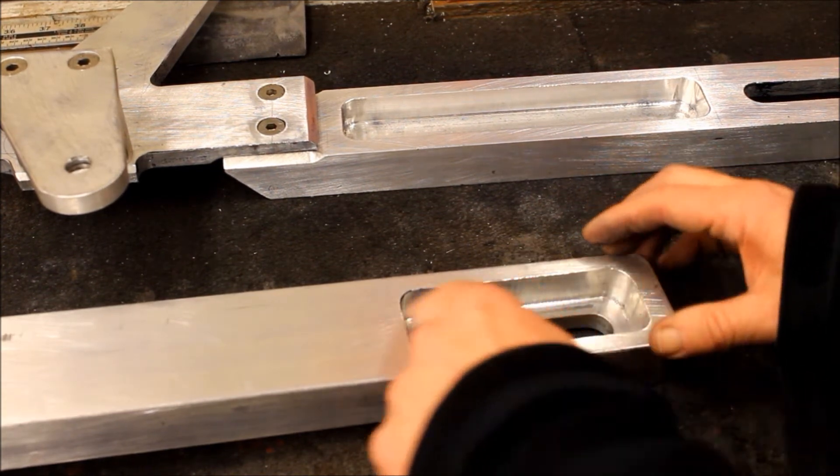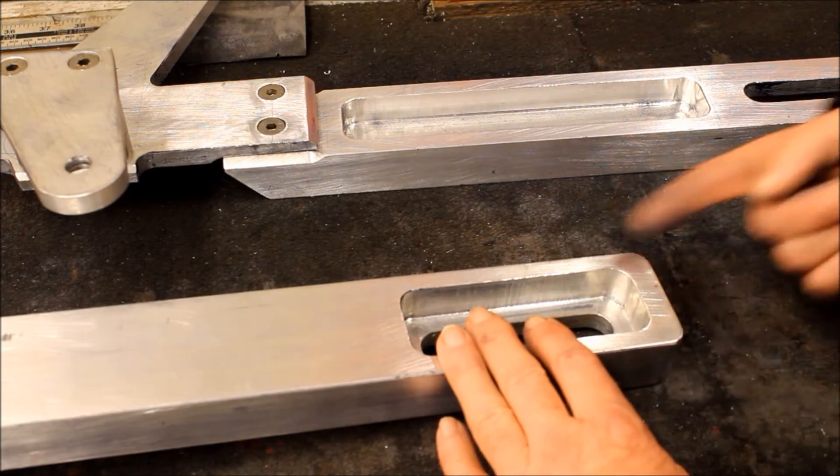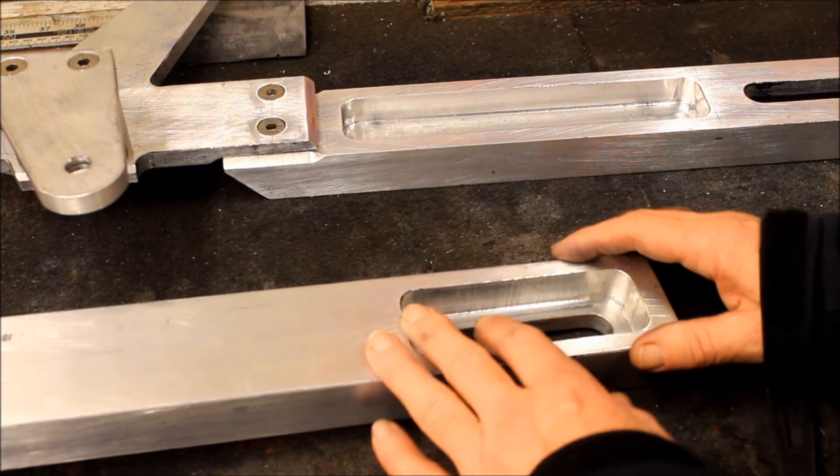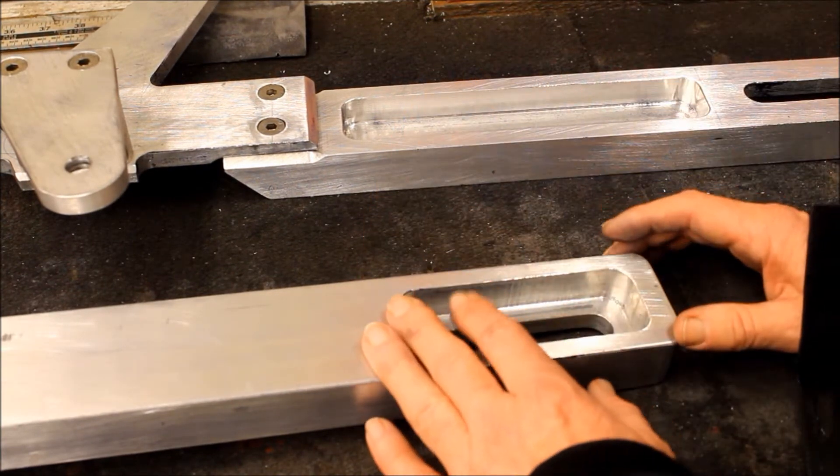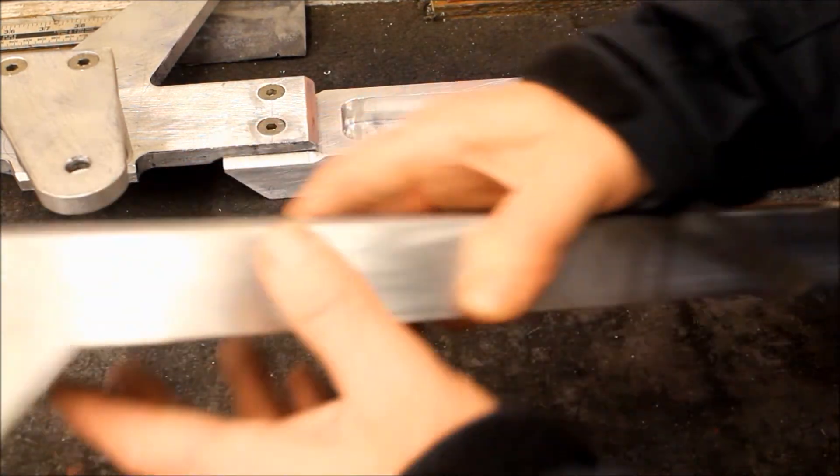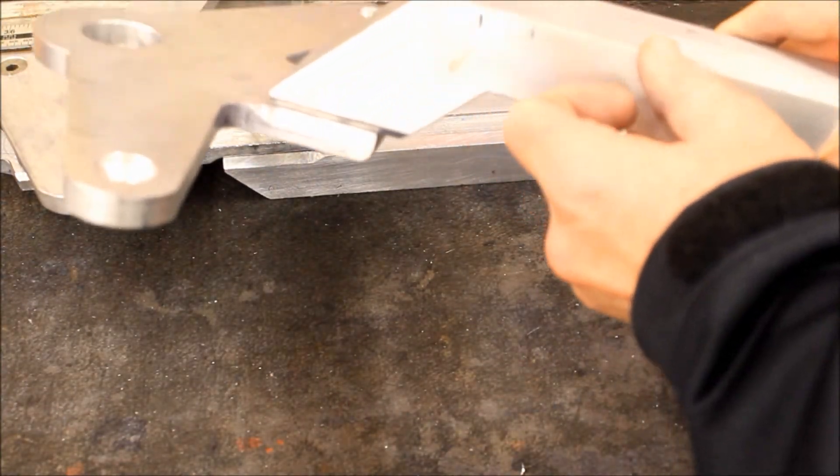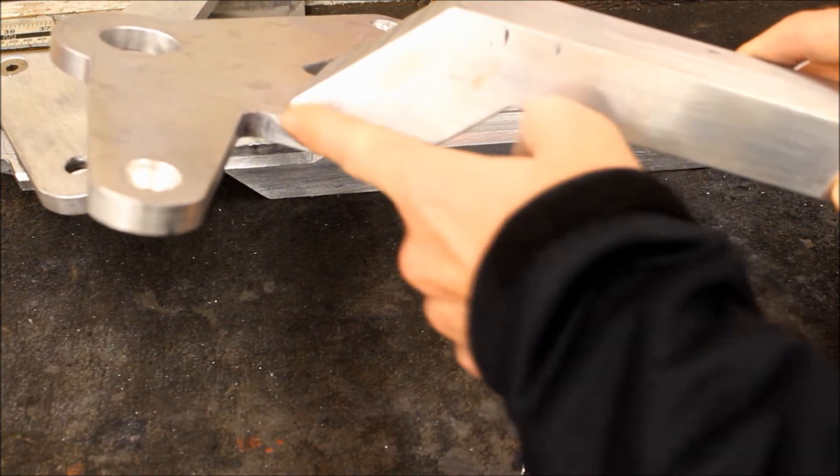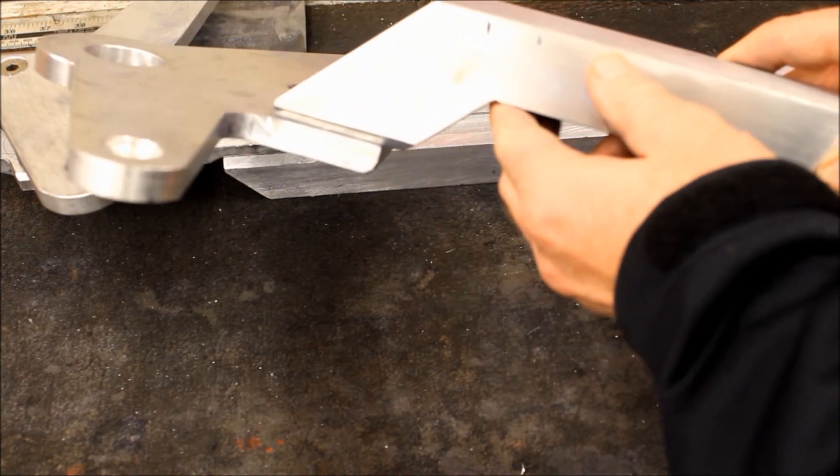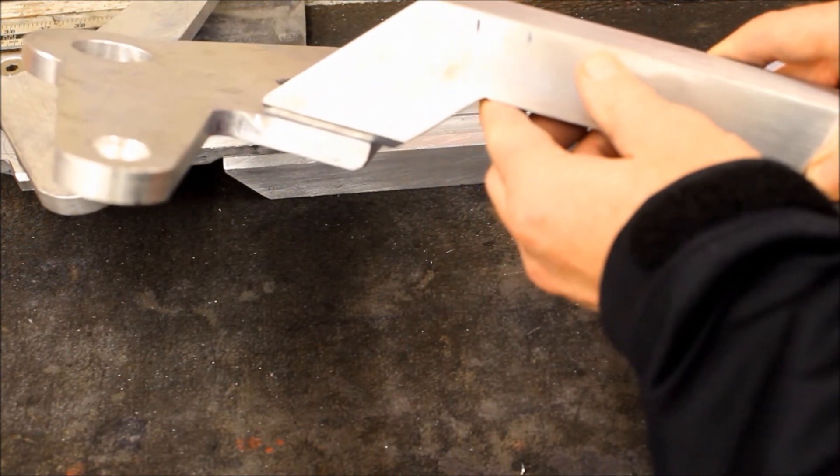Next up is to make the blocks to sit in the slots for the axle adjusters, and once that's done and we're happy with the finish, it can go off to be welded. We've got these V-grooves already machined in to make the welder's job a bit easier and to give a good strong weld.